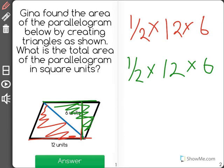So we have 1/2 of 12 times 6 and another 1/2 of 12 times 6, and if you combine them together, we will find it by multiplying 12 times 6, which is 72 square units.